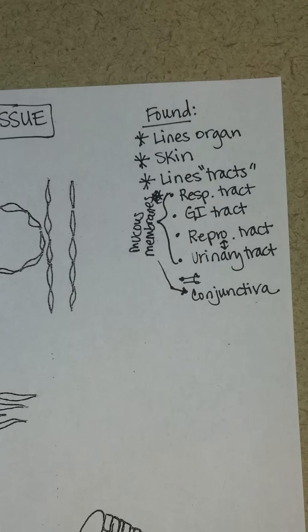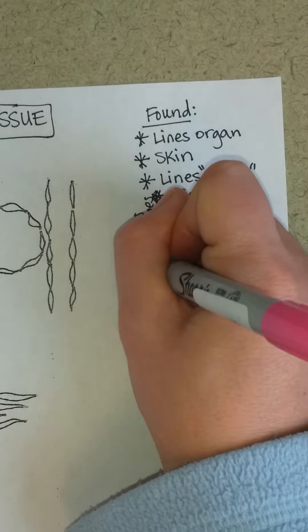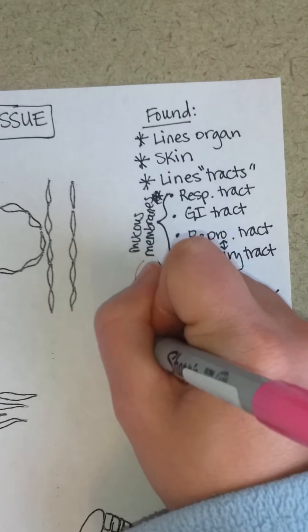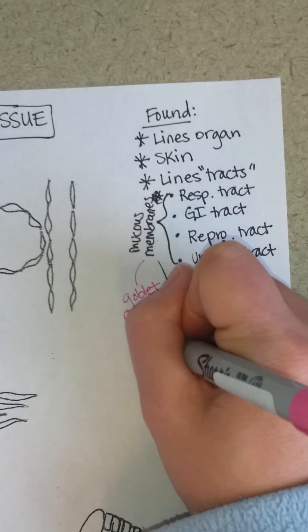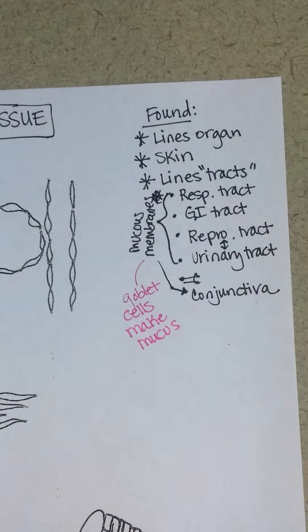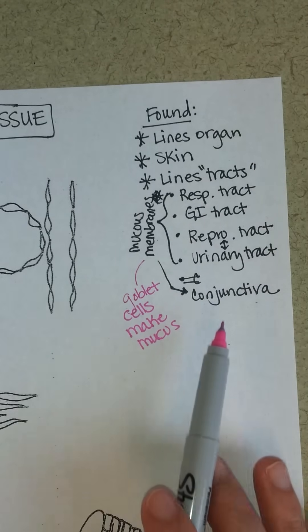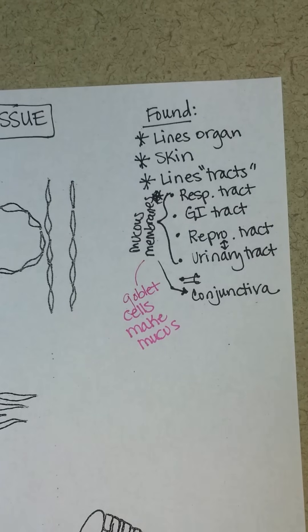All of the mucous membranes have goblet cells that make mucus. Mucus in the respiratory tract will help keep it clean of debris. Mucus in the GI tract keeps food from damaging the walls of the GI tract. Mucus and other secretions in the reproductive tract decrease risk of infection and also lubrication. You even make mucus in the conjunctiva to help keep your eye clean.